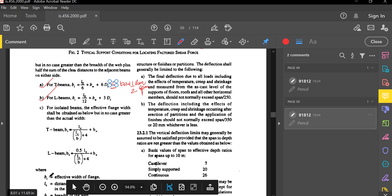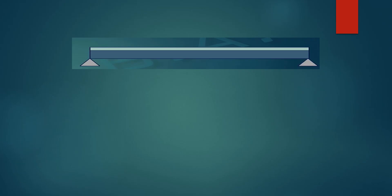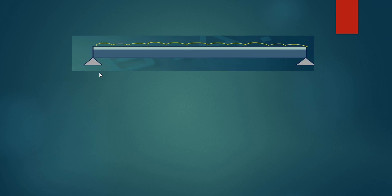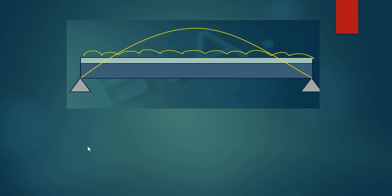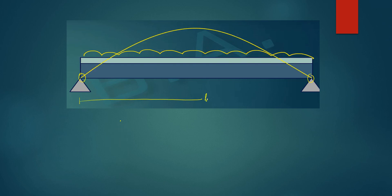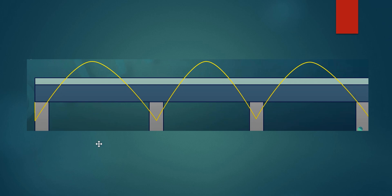Now let us find l₀, the distance between points of zero moment. For a simply supported beam with a UDL, the bending moment diagram shows zero moment at the two support points. The distance between these points of zero moment is l₀. For a simply supported beam, l₀ is equal to the distance between the supports.